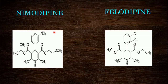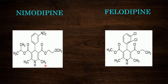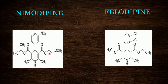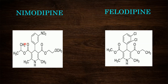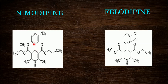Nimodipine is another 1,4-dihydropyridine structure. The second and sixth positions contain two methyl groups. At the third and fifth positions, methoxyethyl ester and an isopropyl group attached to a carboxylate group are present. At the fourth position, nitrobenzene is present — that is why it is called nimodipine, as nitrobenzene is attached at the fourth position.